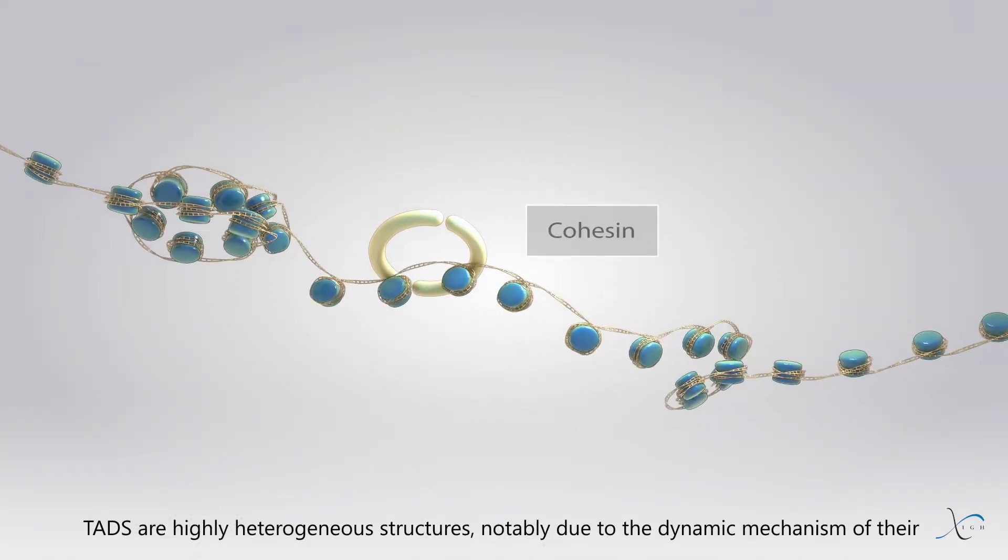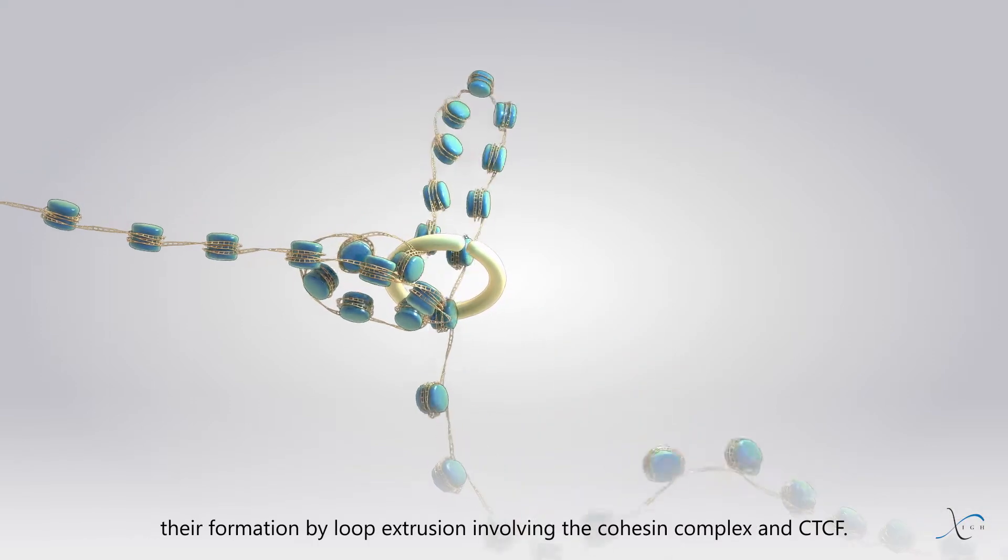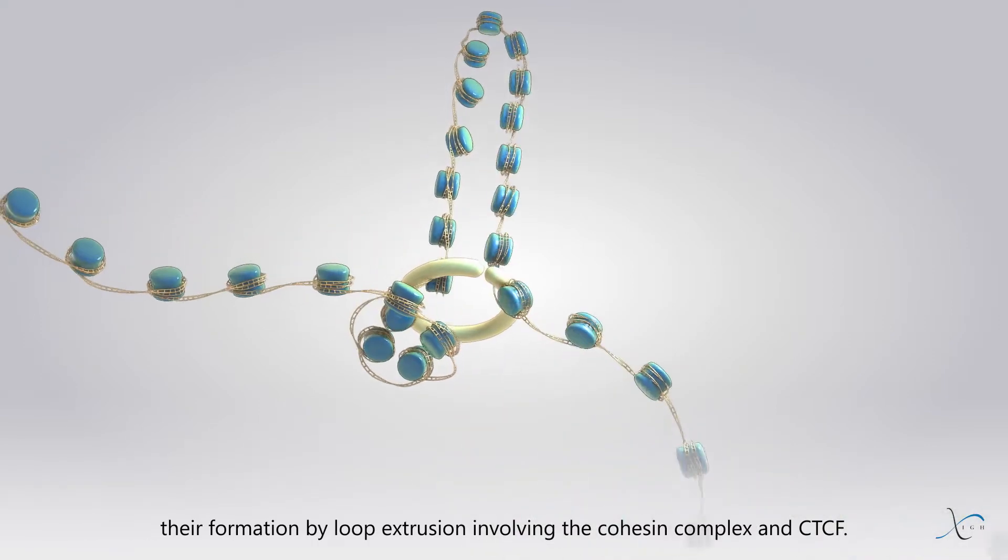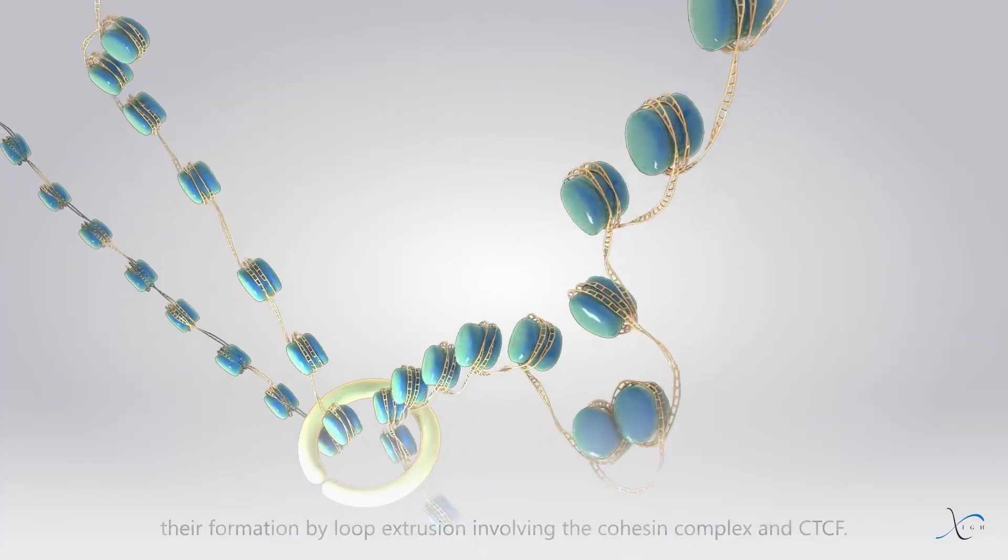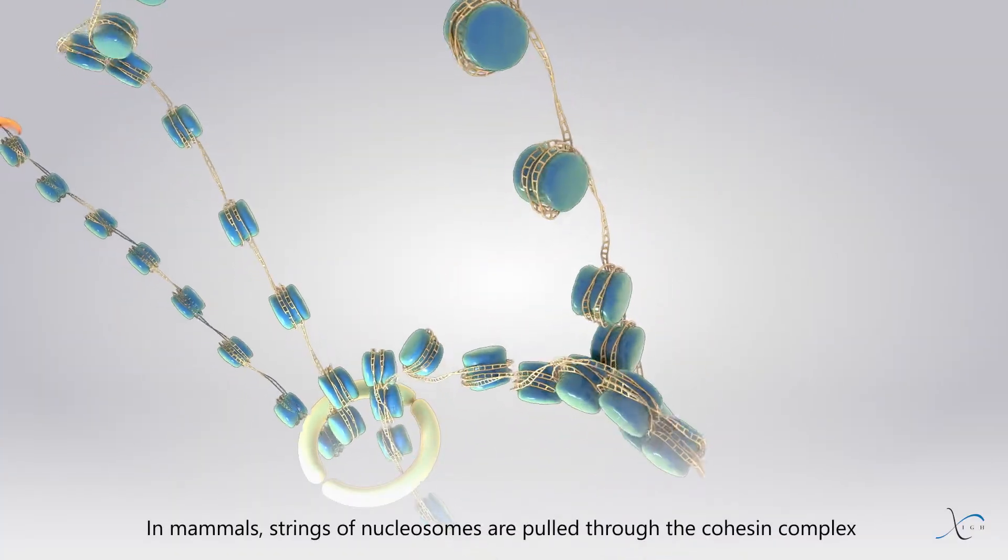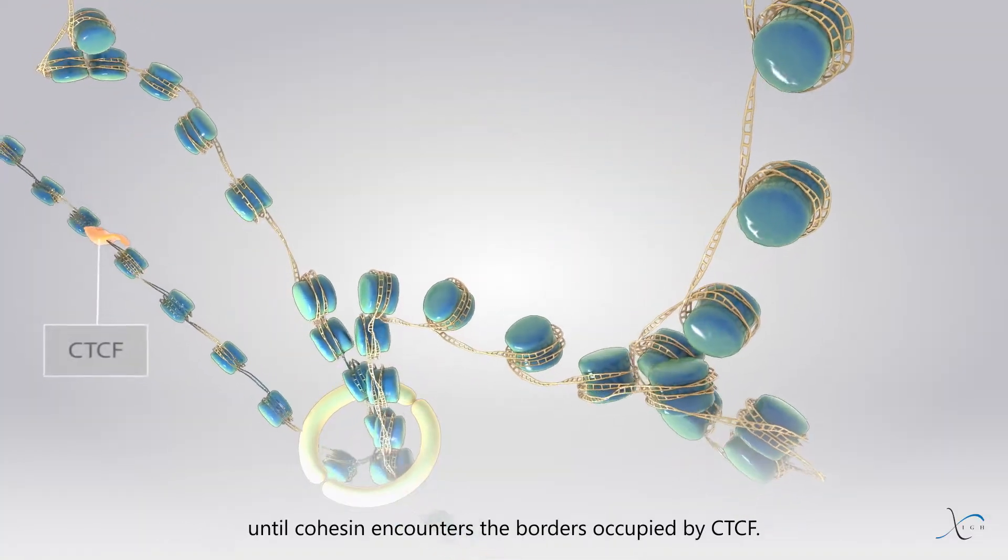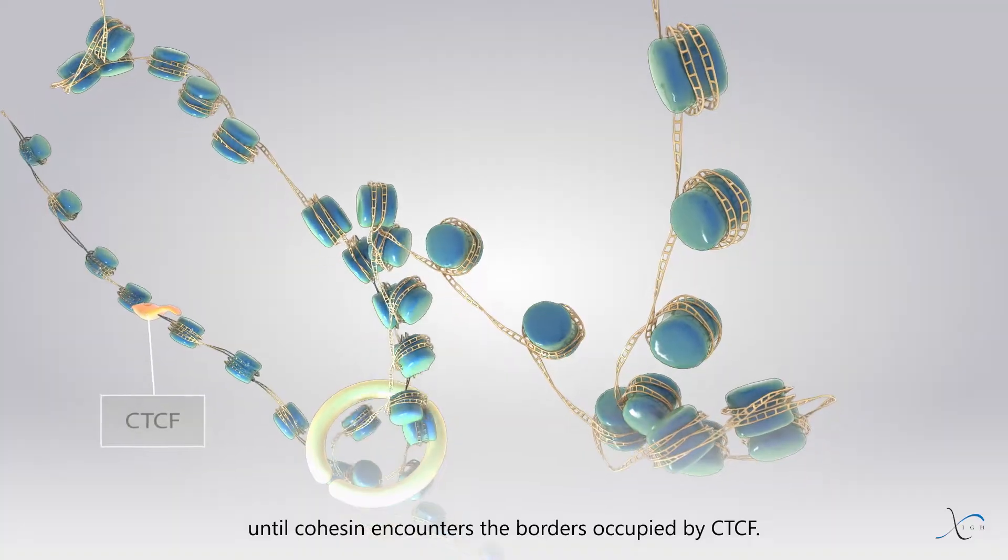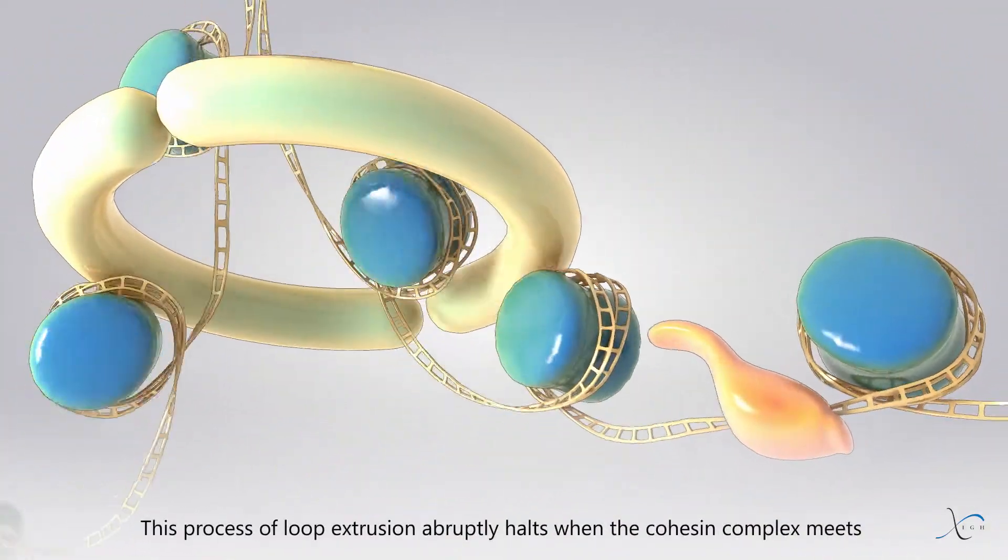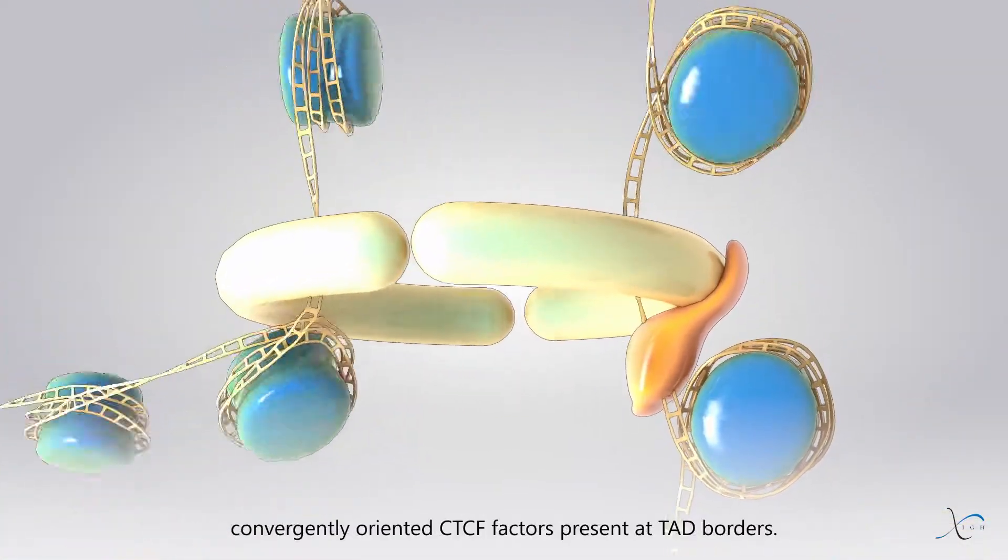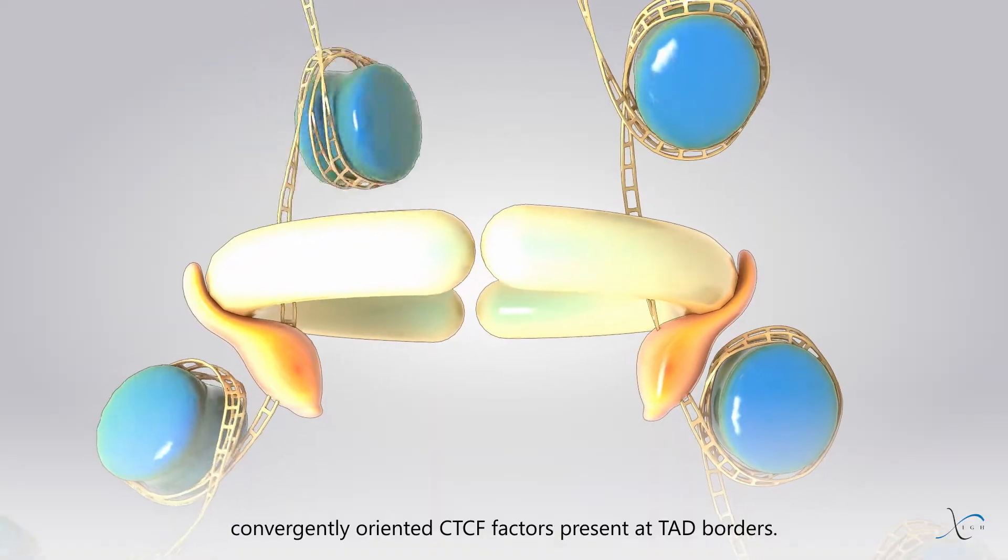TADs are highly heterogeneous structures, notably due to the dynamic mechanism of their formation by loop extrusion involving the cohesin complex and CTCF. In mammals, strings of nucleosomes are pulled through the cohesin complex until cohesin encounters the borders occupied by CTCF. This process of loop extrusion abruptly halts when the cohesin complex meets convergently oriented CTCF factors present at TAD borders.